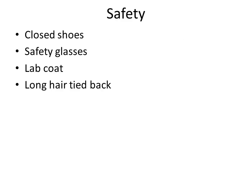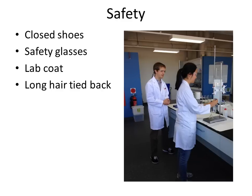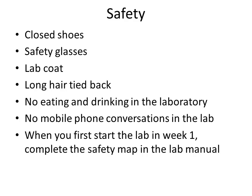You must consider safety at all times when working in the lab. You must wear closed-toe shoes, safety glasses, a lab coat, and have long hair tied back. Whenever you step out of the lab — even if it's just to go to the toilet — take off your lab coat. You're not allowed to wear a lab coat anywhere in the common areas of the building. There is to be no eating or drinking in the laboratory and no mobile phone conversations in the lab; if you must speak on the phone you need to step out. You will find a safety map in your lab manual — when you first come in during week one, complete that map identifying all important safety features. A demonstrator will need to sign off this map before you can start any experiments.